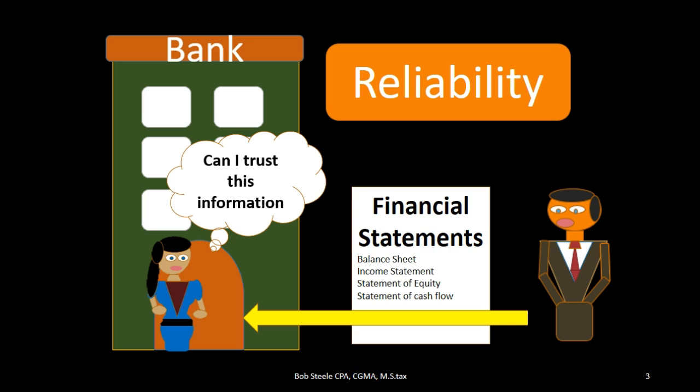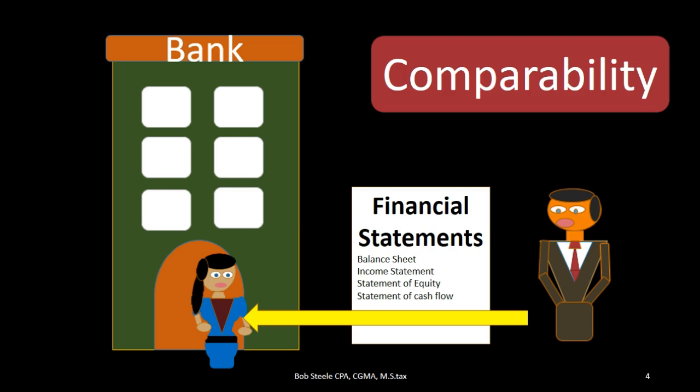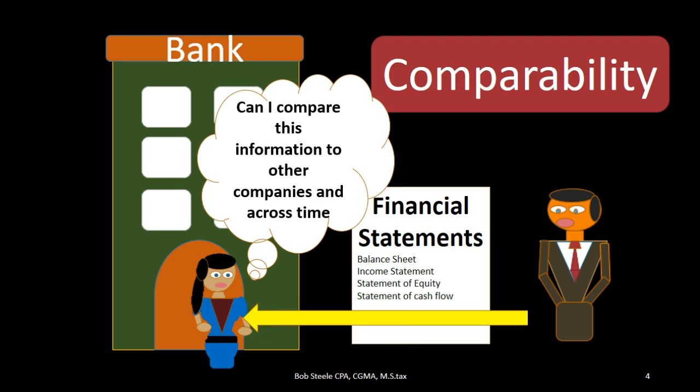The banker can assure herself in a few different ways. They might ask for an external CPA audit or review, but they also are hoping to have some conformity with the financial statements in order to help with that reliability. That leads into our last objective, which is comparability. The banker is asking whether they can compare this information to prior periods and to other companies in the industry and outside the industry. In order to have that comparability, we need a set of rules — generally accepted accounting principles. The banker needs financial statements where they're basically comparing apples to apples.